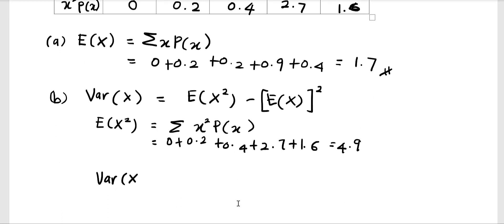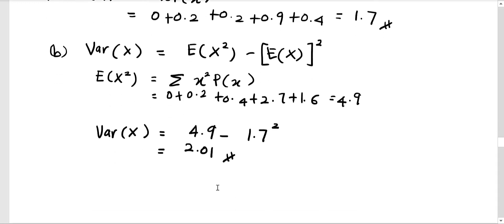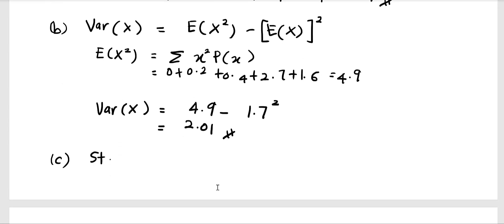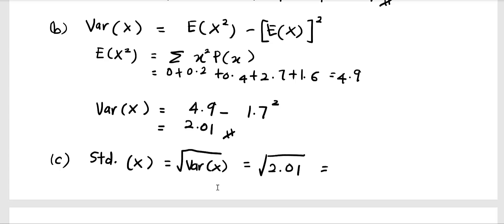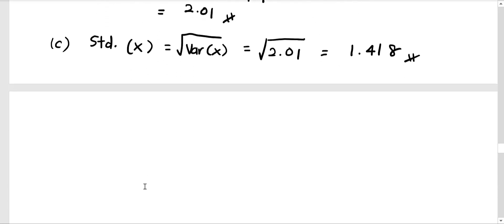So the variance equals E(X²) minus E(X) squared, which is 4.9 minus 1.7 squared, giving 2.01. For the standard deviation of x, the formula is the square root of the variance. Taking the square root of 2.01 gives approximately 1.418.